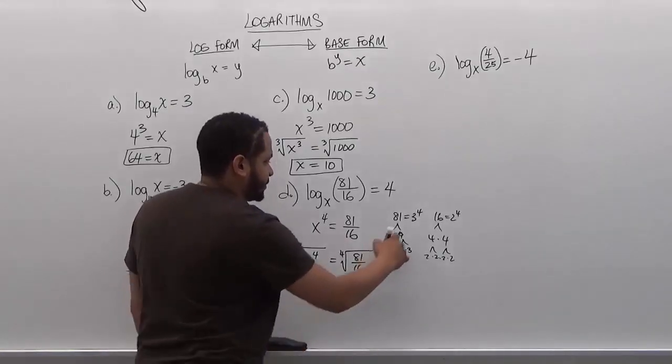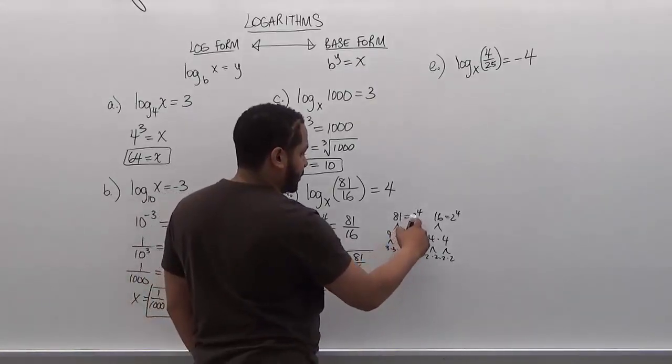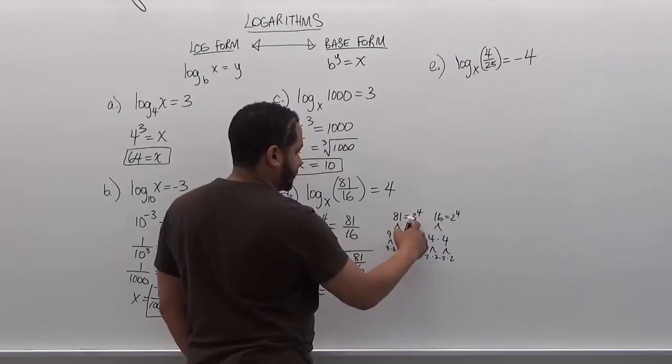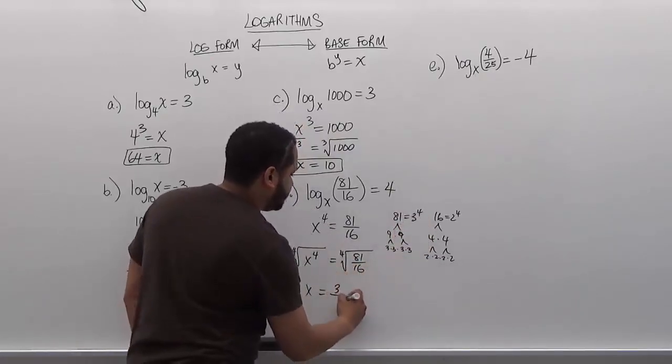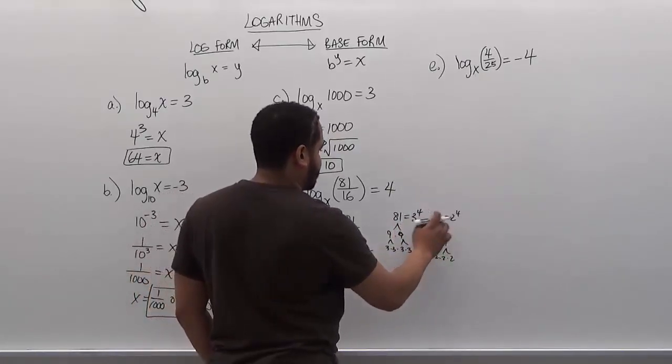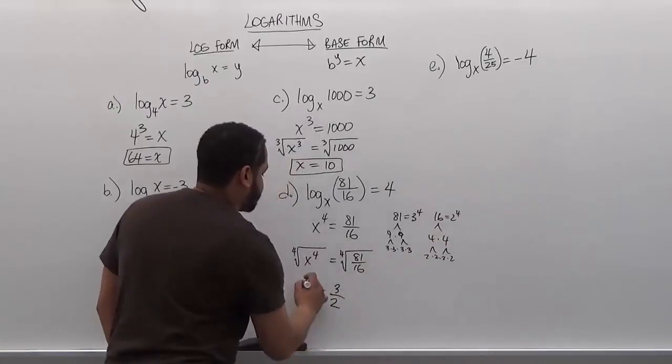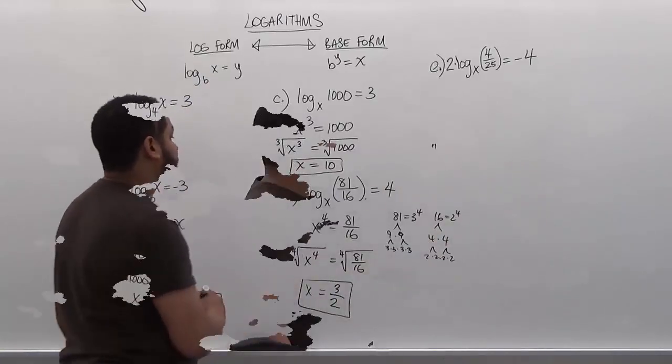Here we have x is equivalent to, the fourth power root of 81 is going to be 3, the base is just 3. The fourth power root of 16 is just 2. So our solution for x is 3 halves.